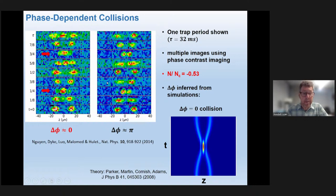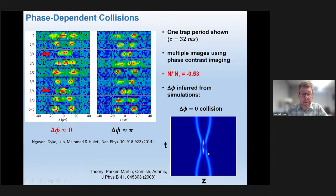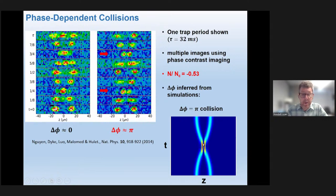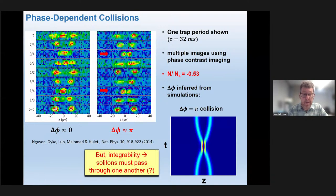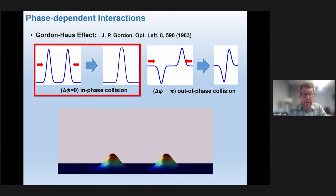I think it's a nice demonstration of the single wave function that a Bose condensate has. There are simulations of these from simulating the nonlinear Schrödinger equation, by Parker, Martin, Cornish, and Adams. This is the pi phase shift where there's a node between them. And this is when the phase shift is equal to zero — when the phase difference between the two solitons is zero, there's an antinode. Integrability tells us the solitons must pass through one another, as shown here in the solution of the nonlinear Schrödinger equation.